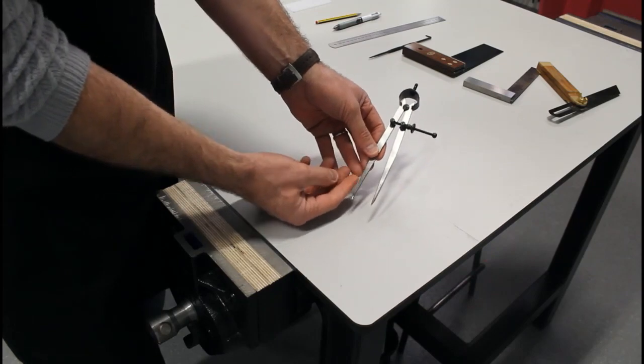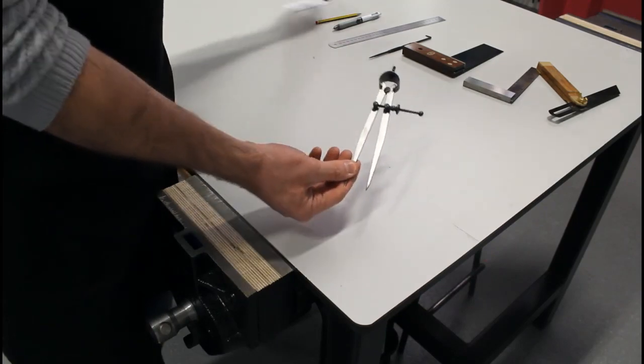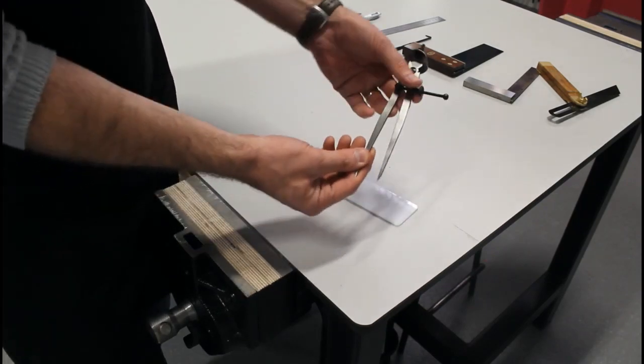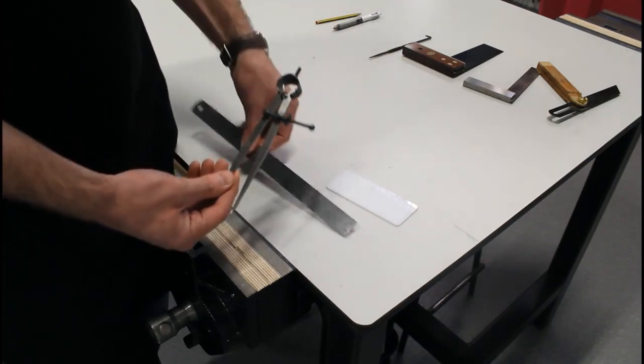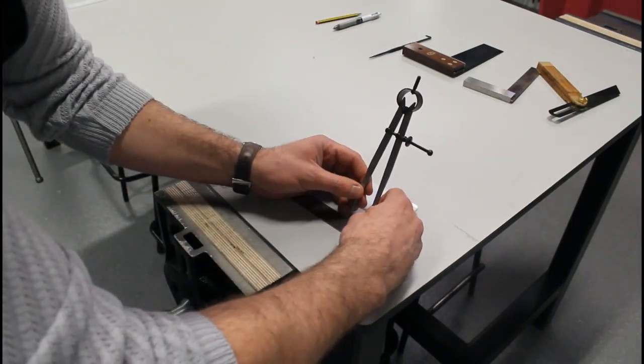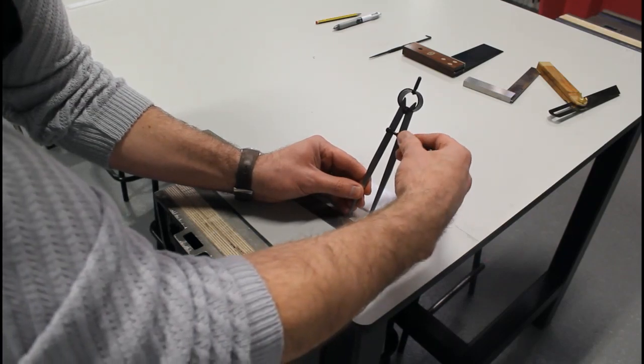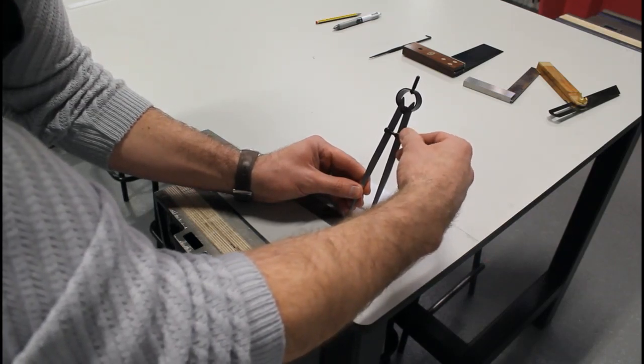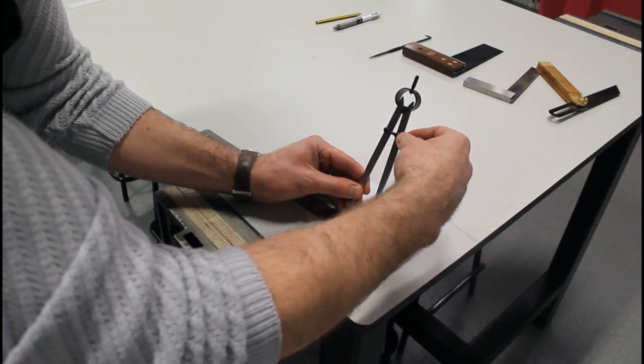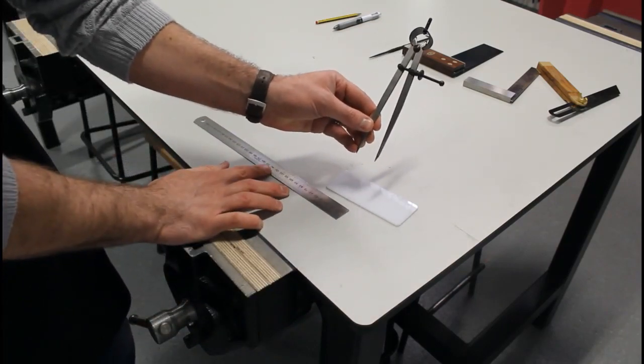And again, a compass is another marking out tool. And this allows us to measure exact points. Let's say for instance, we had 30 millimeters and we wanted to line up a number of holes at 30 millimeters.